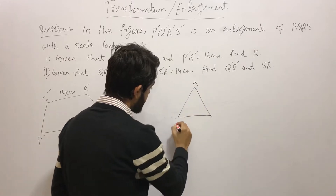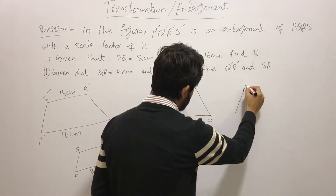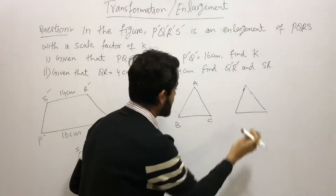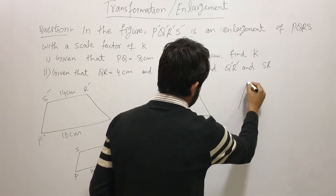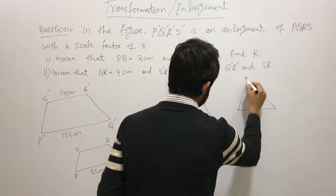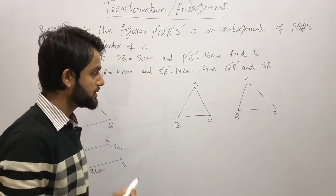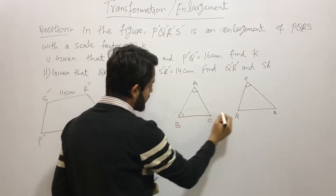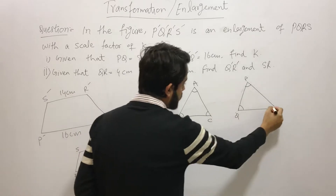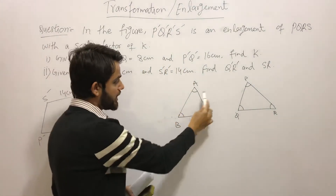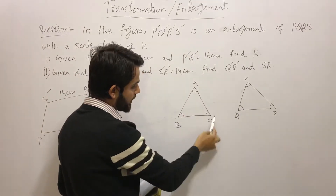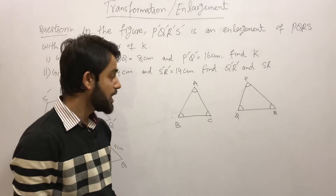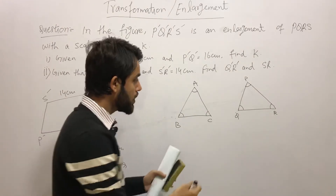I am drawing two figures here — triangle ABC and another triangle PQR. These two triangles are said to be congruent if their corresponding angles are equal: angle A equals angle P, angle B equals angle Q, and angle C equals angle R. Also, the corresponding sides must be equal: AB equals PQ, AC equals PR, and BC equals QR. Then these two triangles are said to be congruent triangles.